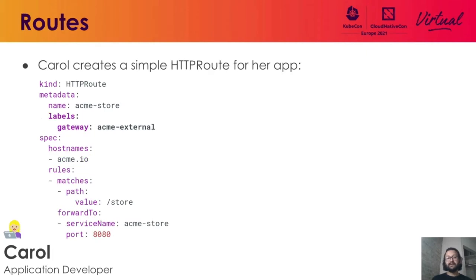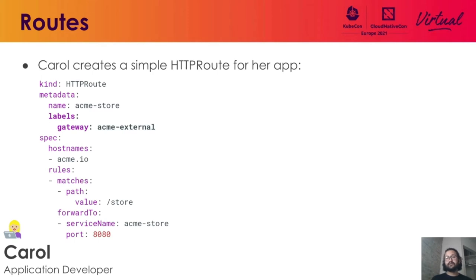Once Bob has the gateway resource created, Carol can finally deploy her application. Carol goes ahead and creates an HTTP route resource with the same label. This resource would feel very familiar as it relates closely with the Ingress resource we already have in Kubernetes. What this configuration is directing the gateway to do is: all requests for acme.io with path prefix of /store should be forwarded to acme-store service on port 8080. This gives an overview of how Bob, Alice, and Carol work together to deploy the e-commerce store application using Gateway API.